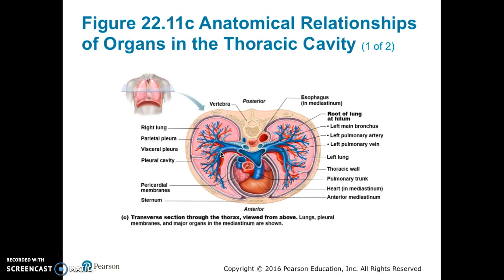This figure illustrates the location of the lungs in the thoracic cavity by way of a transverse section viewed from above. The heart lies most anterior, while the lungs curve towards it and fill the cavity — right lung here, left lung here. The esophagus is posterior to the lungs in the medial portion and is anterior to the spine.